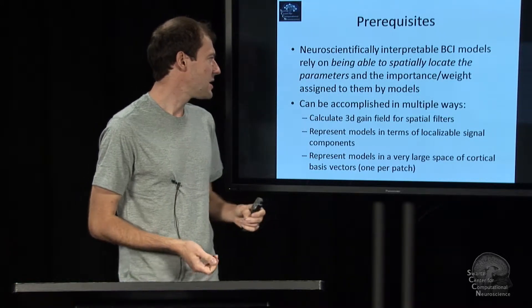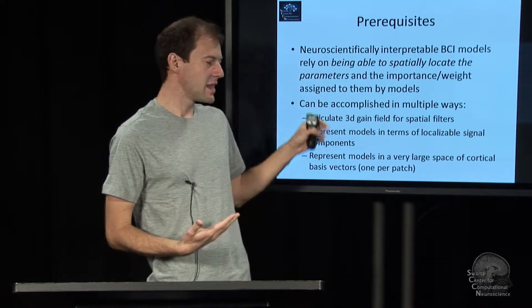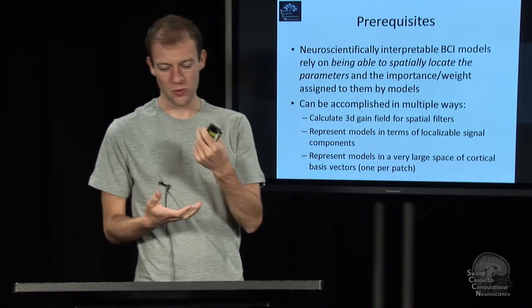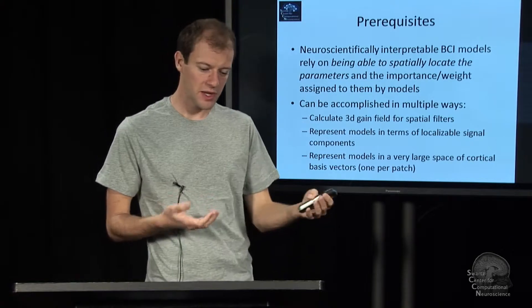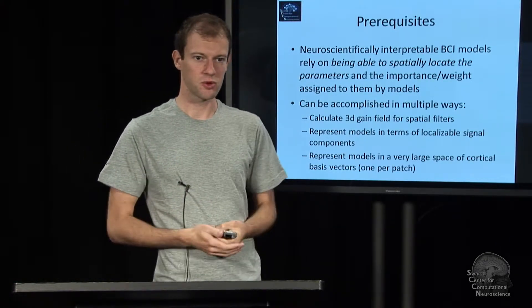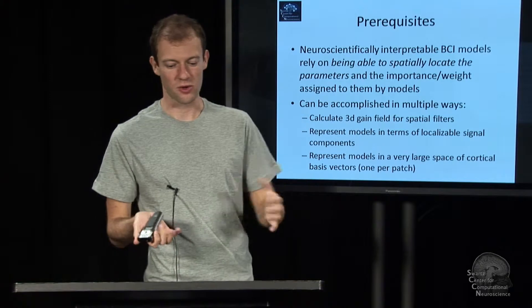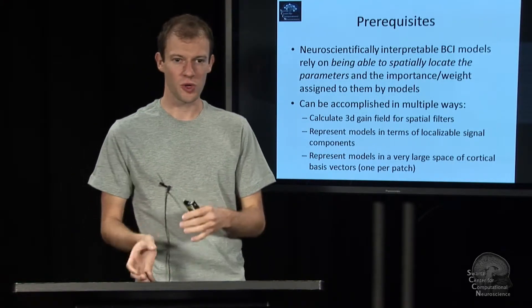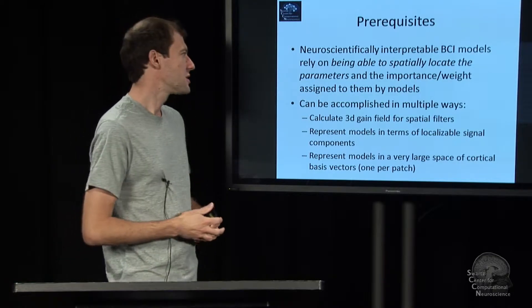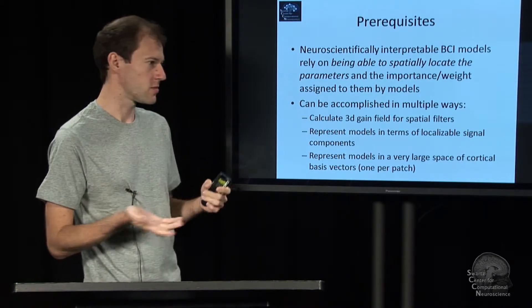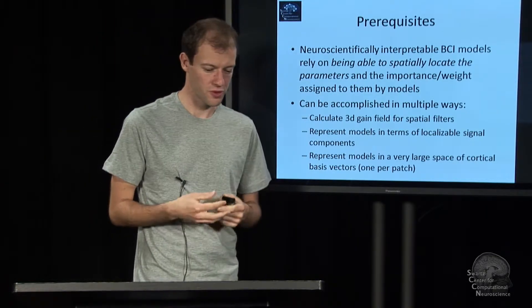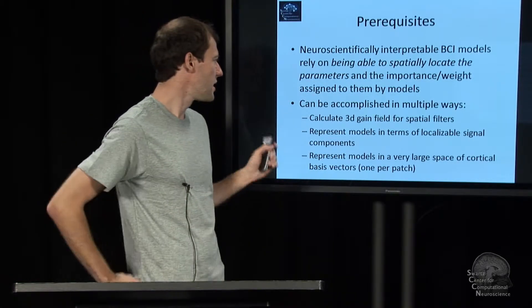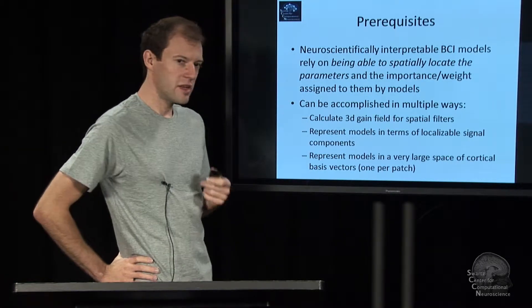Thereby, you locate where the model assigns weight or importance in the brain of the person, because there's a lot of information in the spatial distribution of where things are happening. That goes a long way towards interpretation, and is important if you want to know whether you're doing the right thing with your BCI.